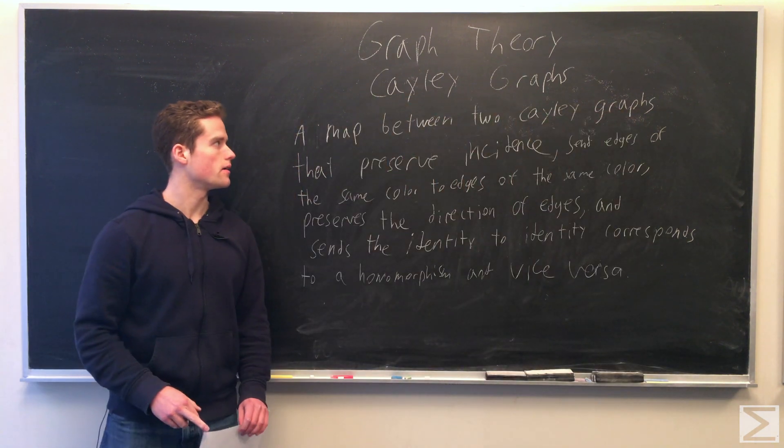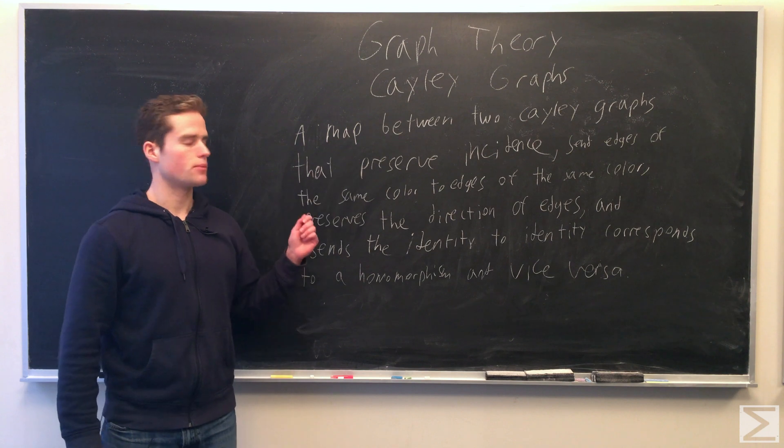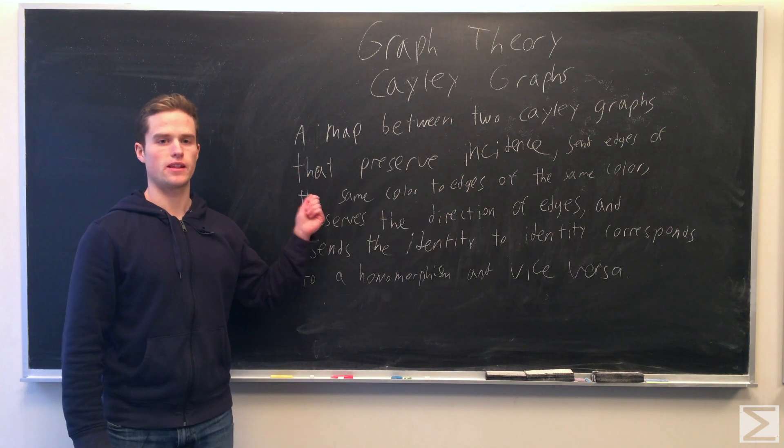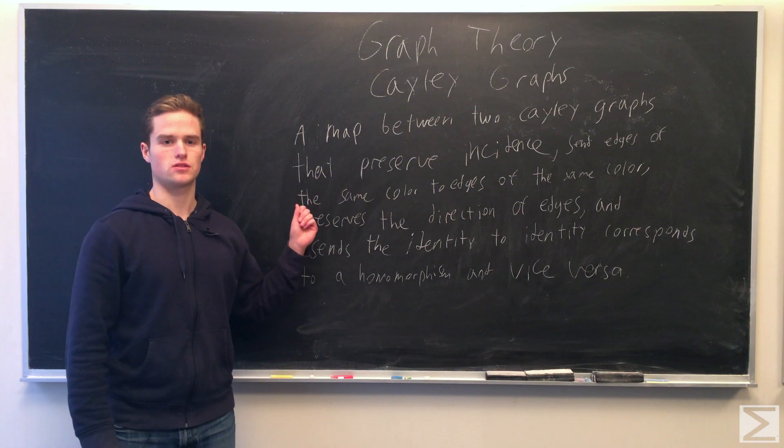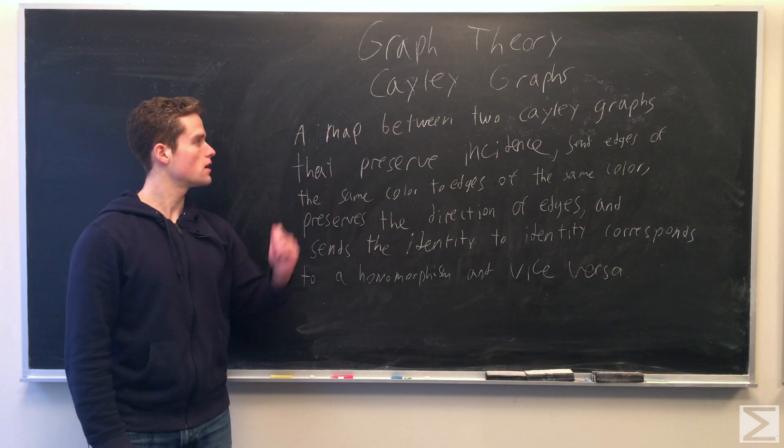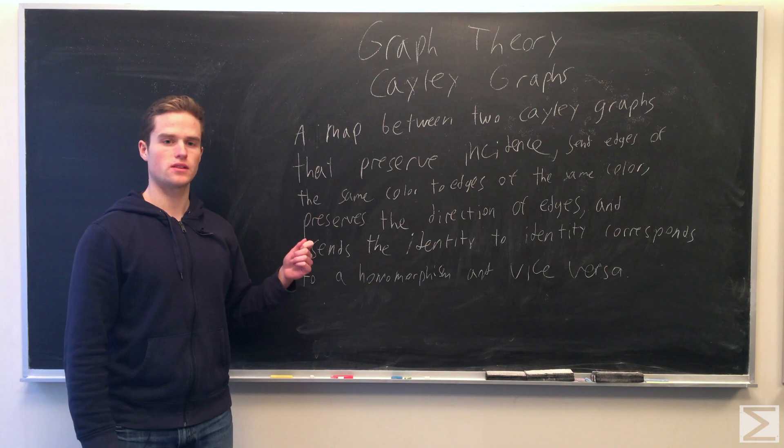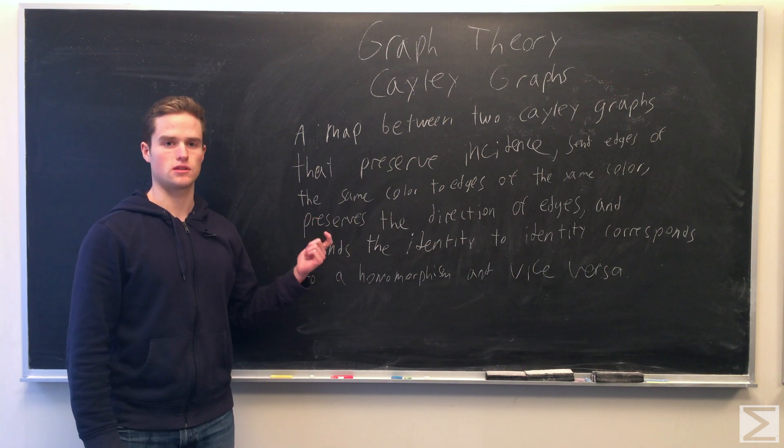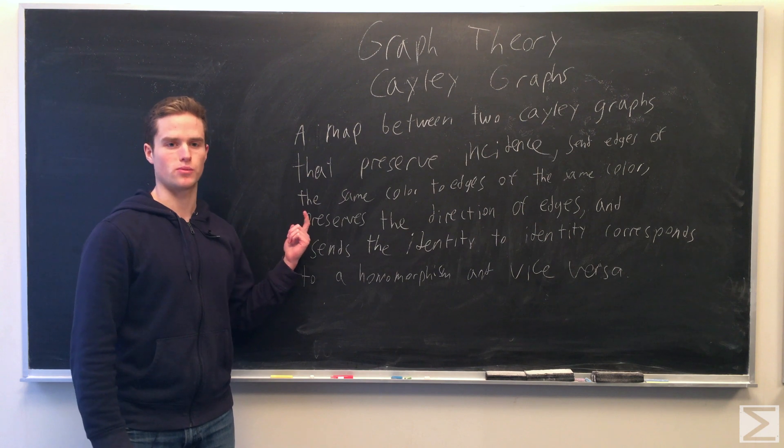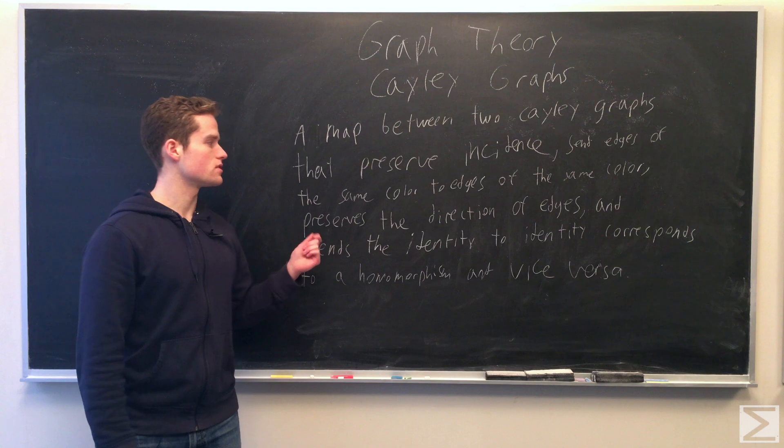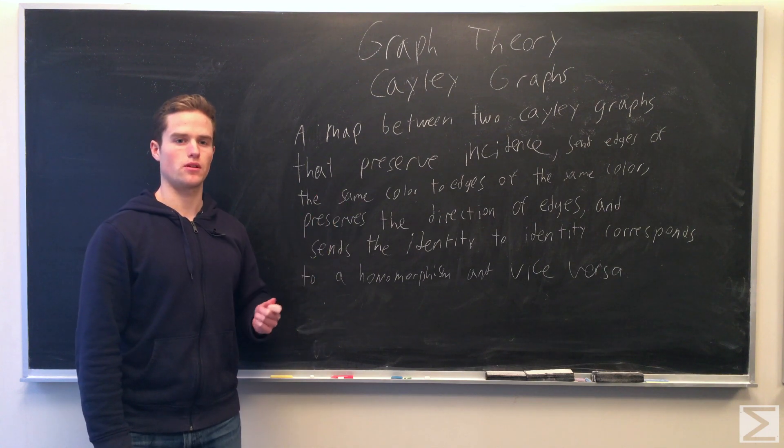So something that follows pretty quickly: we have some map between Cayley graphs, some function from vertices to vertices. This map preserves incidence. So if two vertices are incident in our original Cayley graph, their images will be incident in the final Cayley graph. It sends edges of the same color to edges of the same color.